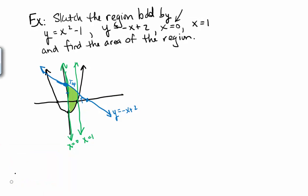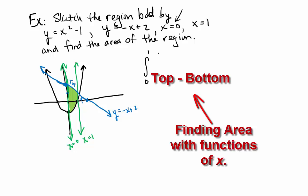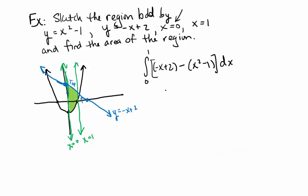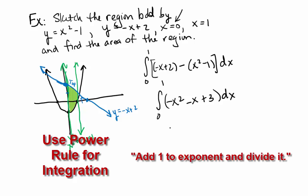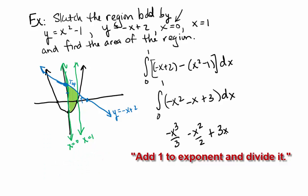So what would the integral be this time? The integral from 0 to 1 of the top, which is negative x plus 2, minus the bottom, which is x squared minus 1, dx. Simplifying, we have the integral from 0 to 1 of negative x squared minus x plus 3. Integrating, we get negative x cubed over 3 minus x squared over 2 plus 3x, evaluated from 0 to 1.